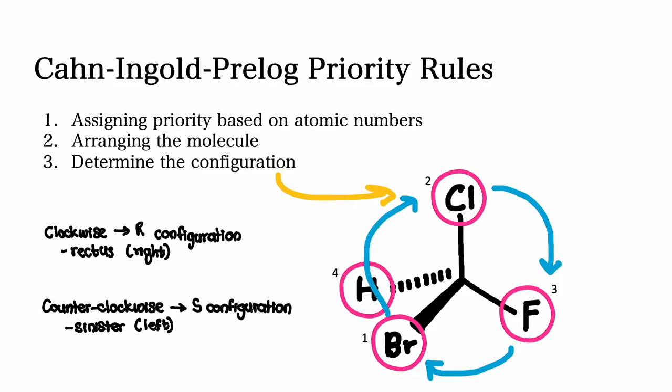R stands for rectus, and this is Latin for right. So if the priority groups are rotating in a clockwise direction, which is it's moving towards the right hand side, then it's easy to remember.